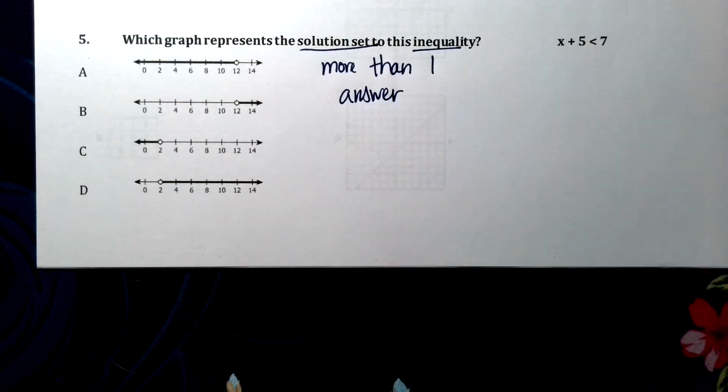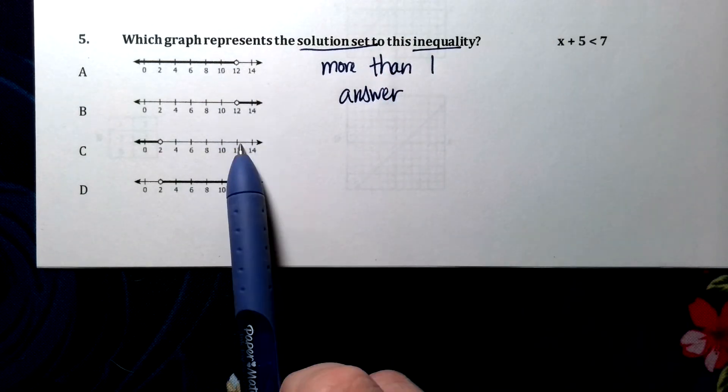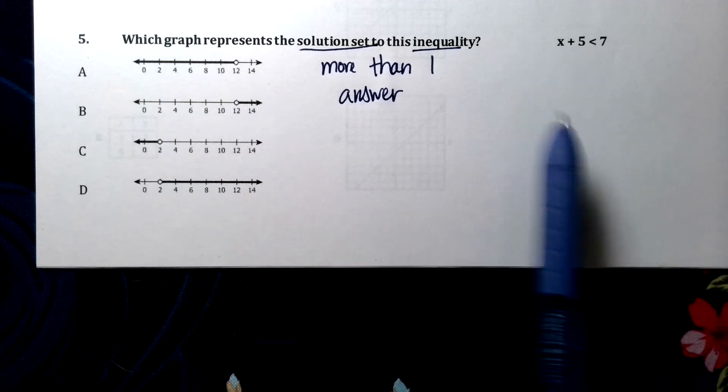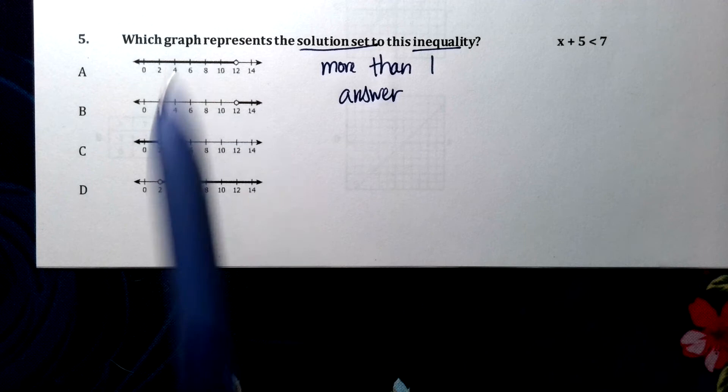Because there's more than one answer, I need to show it on these graphs by doing my arrows. So first, I need to solve it, and then pick which one matches the situation.